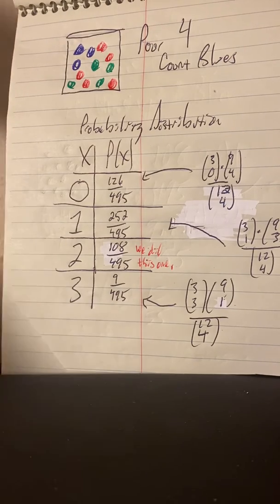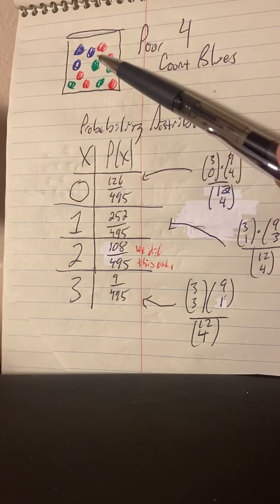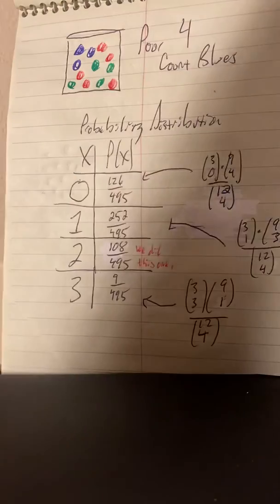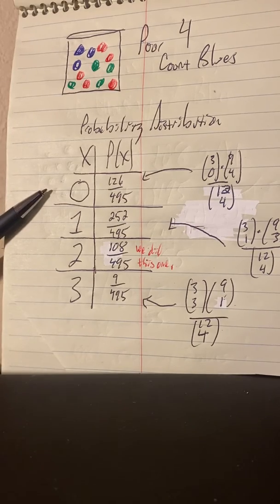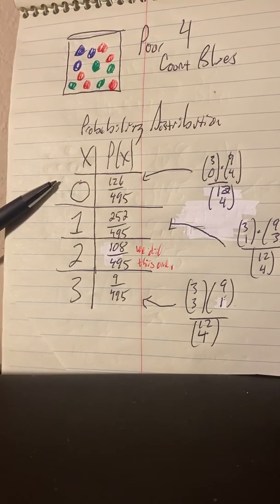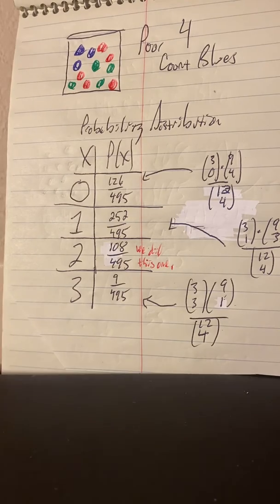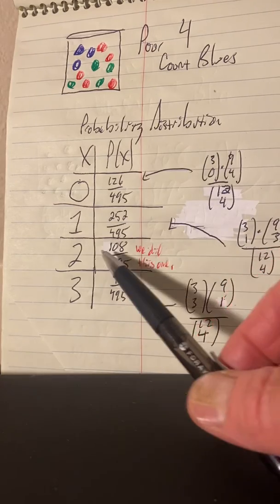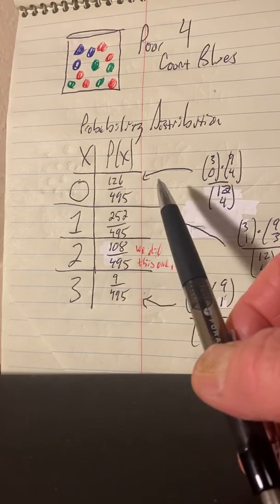Now what we want to do is look at the probability distribution for our experiment of pouring out four from this urn that has 12 balls, three of them blue. We're going to pour out four and count the number of blues. What's the probability distribution? Well, probability distribution lists all the things that could happen. We're counting blues, so we could have zero as our count, one, two, or three. And then you list the probabilities of those things. We already did this one, it's 108 out of 495.